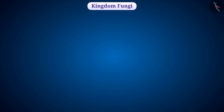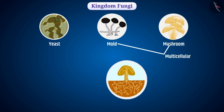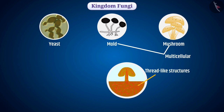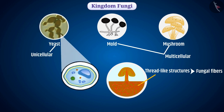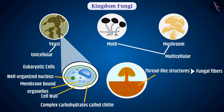Now let us discuss the Kingdom Fungi, also called the fungus kingdom. It includes organisms like yeast, mold, mushroom, etc. Most fungi are multicellular, made up of long thin thread-like structures called fungal fibers, but yeast is unicellular. They are made up of eukaryotic cells which have a well-organized nucleus and other membranous organelles. Their cell walls are made up of complex carbohydrates called chitin.